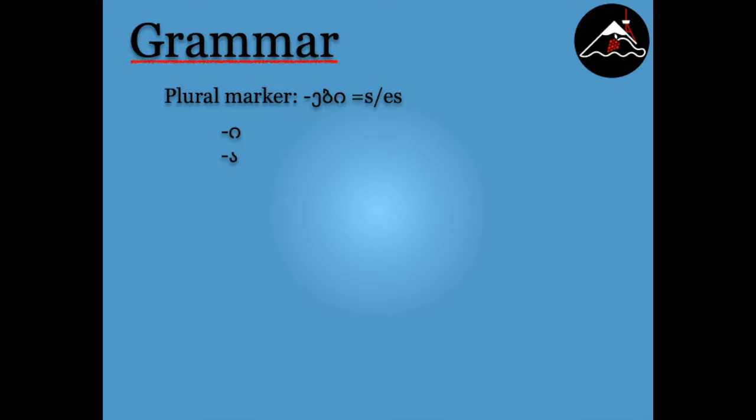For example, to say 'I have three brothers,' you would say 'Sami Zma Mkavs.' If you wanted to say 'I have sisters,' you would say 'Dabi Mkavs.' And if somebody asked you 'Do you have cats?' they would say 'Katabi Gkavs?'